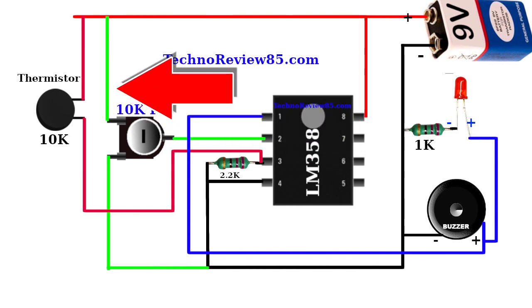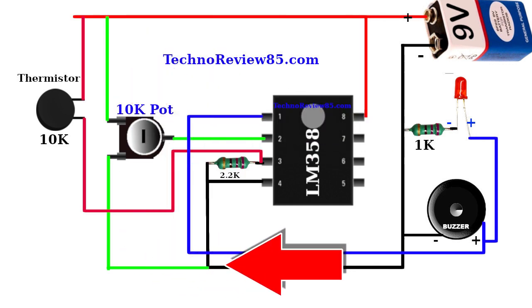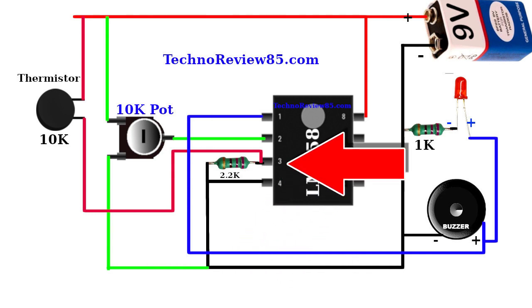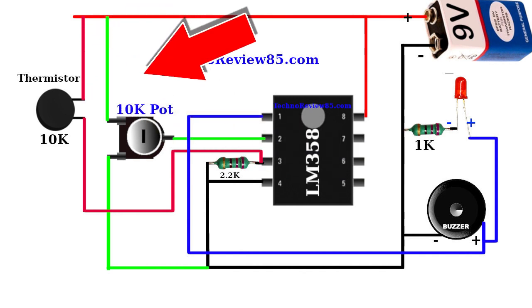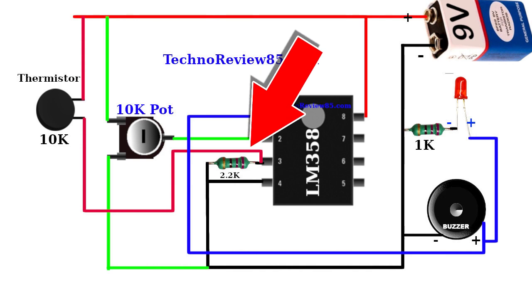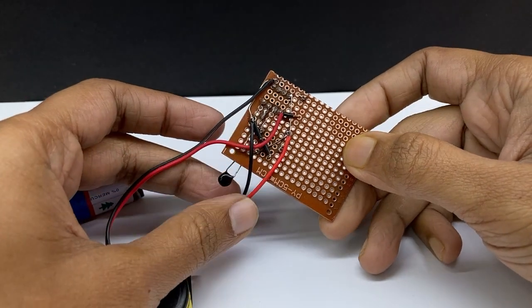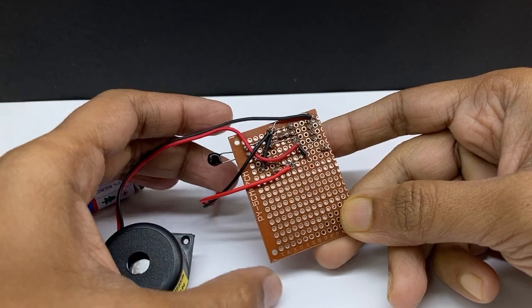Resistor 2.2K is connected between negative line and IC pin 3. The thermistor is connected to positive line and IC pin 3. The practical connections look like this. Now all connections are done.